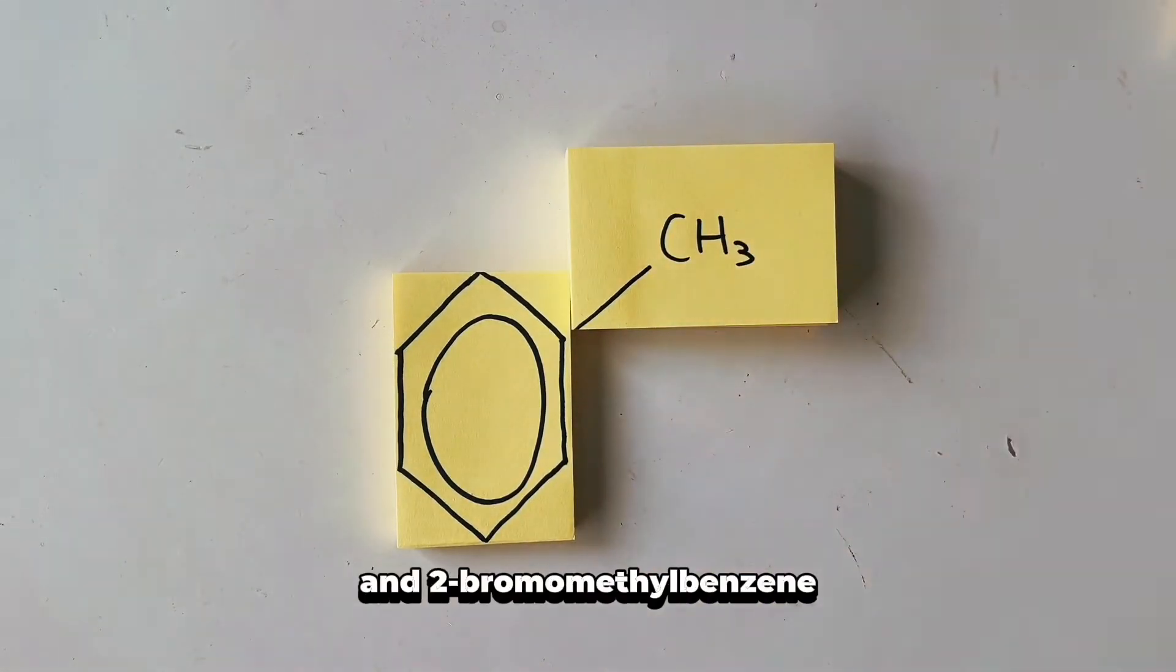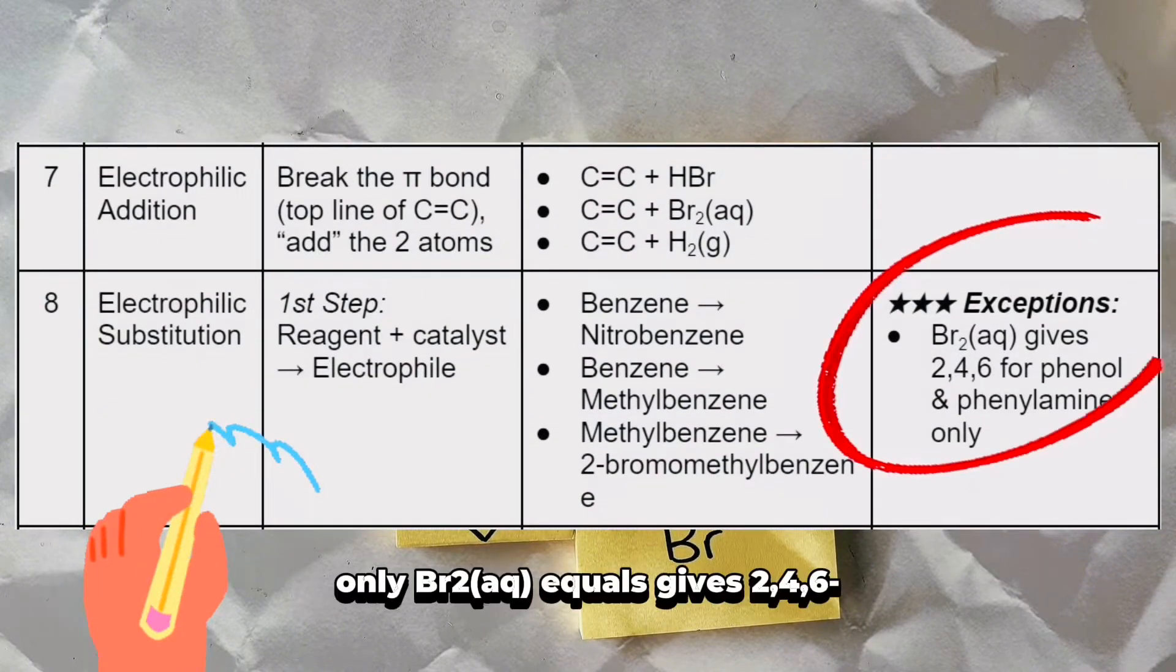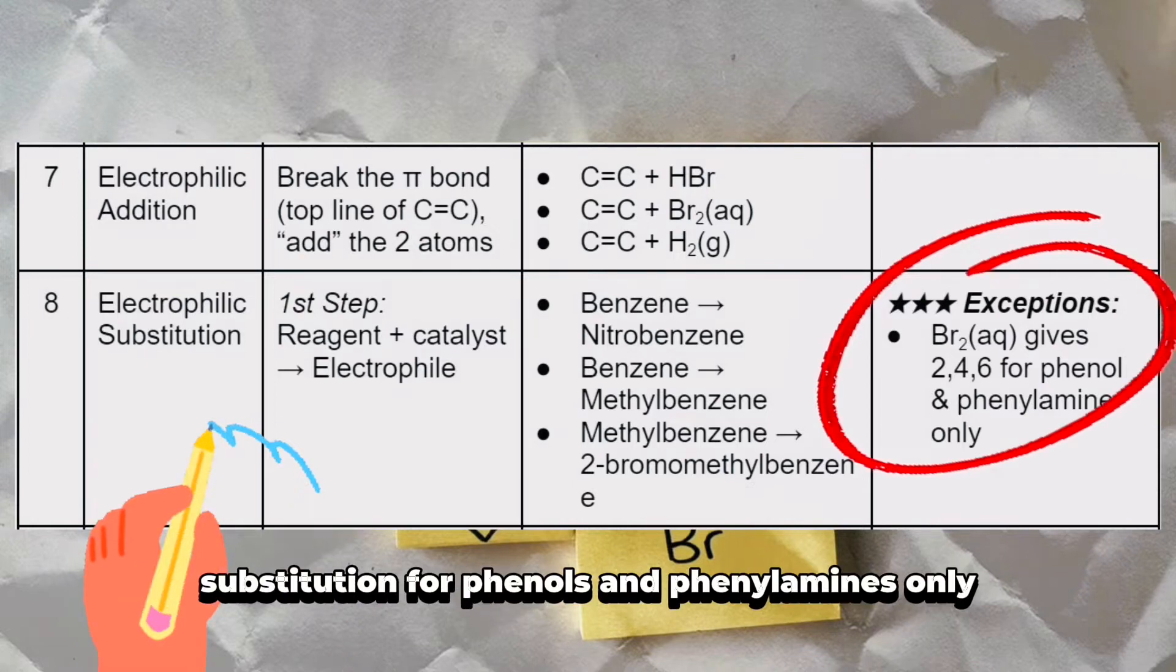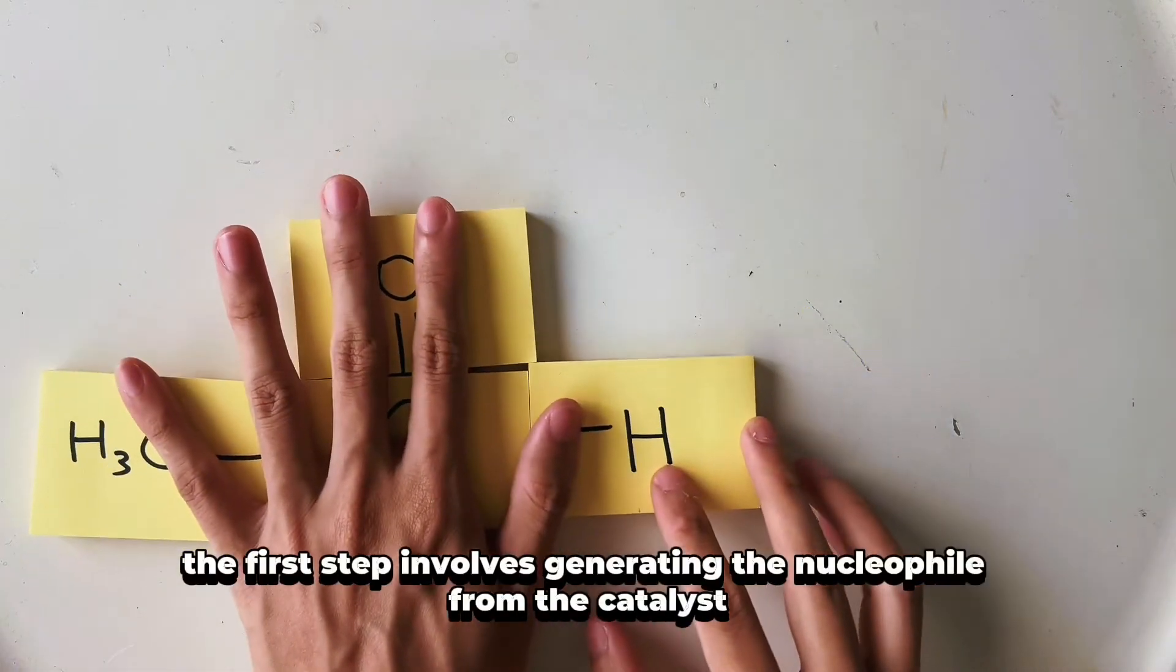But do take note of this exception: only bromine water Br2 aqueous gives 2,4,6-substitution for phenols and phenylamines only.